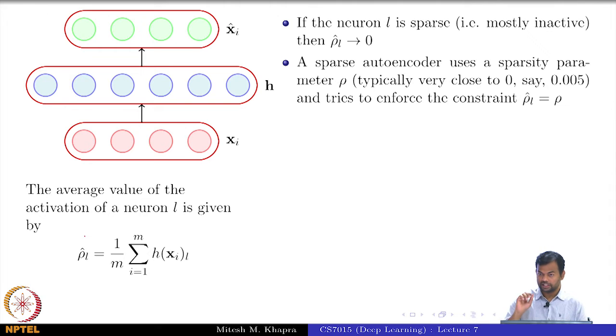A sparse autoencoder uses a sparsity parameter rho, typically very close to 0, say 0.005, and it tries to enforce the constraint that on average the activation of any neuron in the hidden layer should be equal to rho, which is again close to 0. Now, this is all fine in plain English. First of all, tell me why does this make sense? What is it that you are trying to ensure?